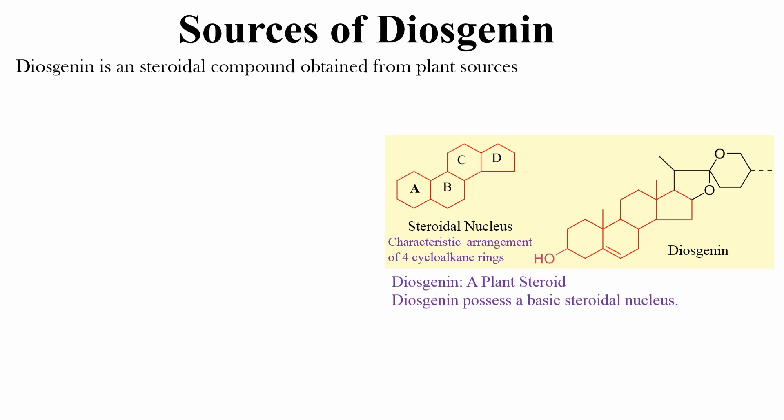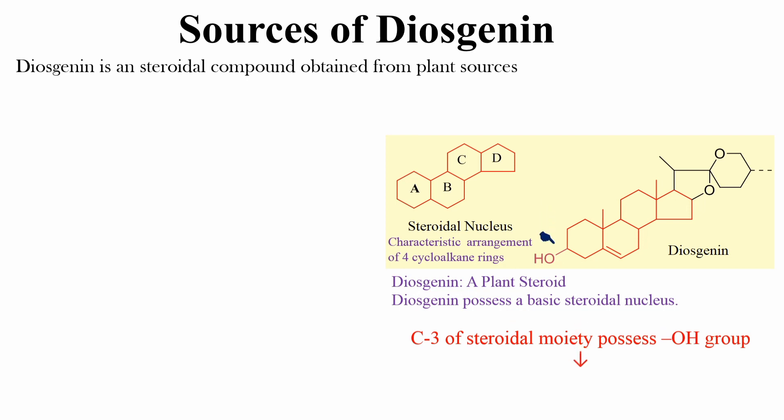In the case of diosgenin, the C3 of the steroidal moiety possesses an OH group. This means diosgenin is a steroid, and more accurately, it is a steroid called phytosterol or plant sterol.